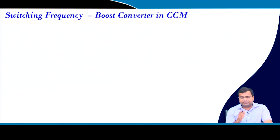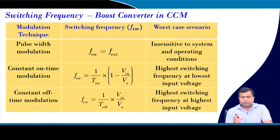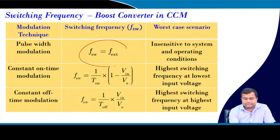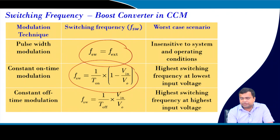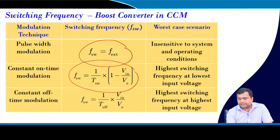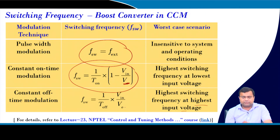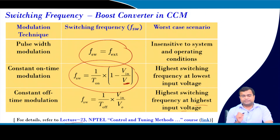For boost converter switching frequency: in fixed-frequency operation it is fixed. For variable frequency, the highest switching frequency occurs at the lowest input voltage for constant on-time, and at the highest input voltage for constant off-time — as discussed in lecture 23.